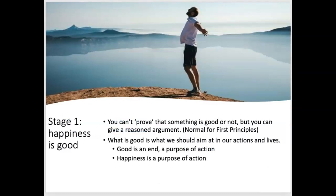Moving on to the actual theory itself — the proof itself. I'm going to be using Michael Leiswing's resources very much here. I recommend his textbook, Philosophy for AS and A-level Epistemology and Moral Philosophy. Beginning with stage one: that happiness is good. Mill says that you can't prove that something is good or not, but you can give a very reasoned argument around it. He argues this is very normal for first principles — you cannot deduce first principles. What is good is what we should aim at in all of our actions; good is an end, a purpose of our action. Happiness is the purpose of our actions, so he argues.